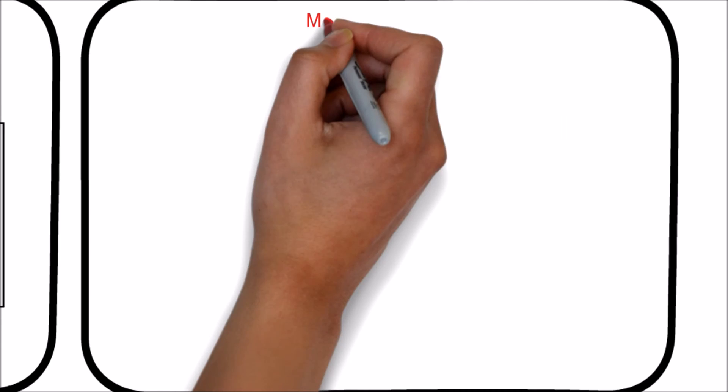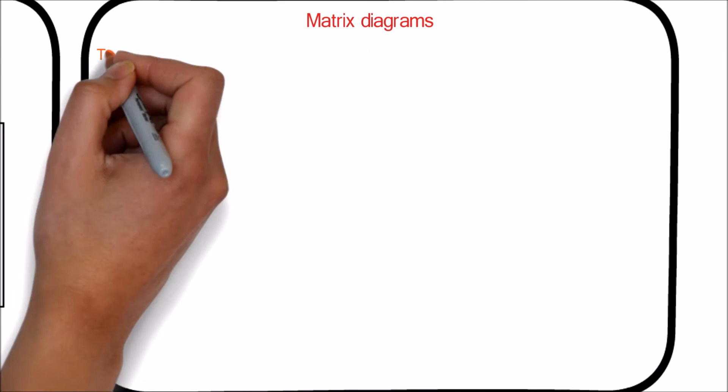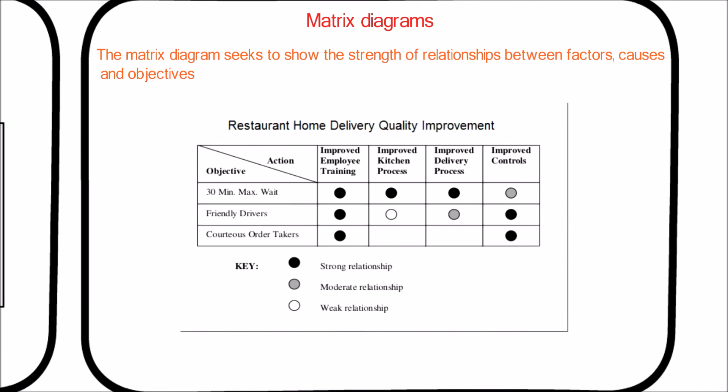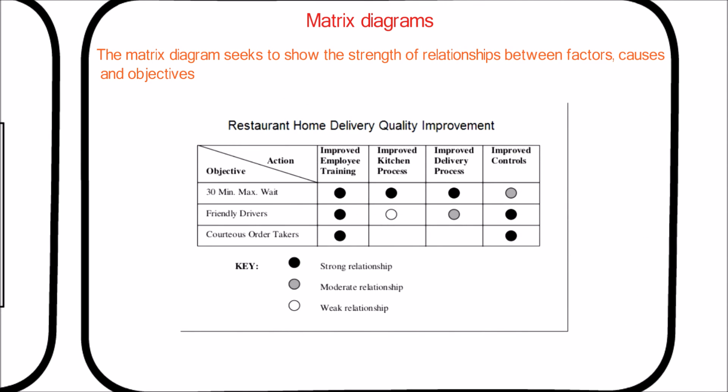Now let's see the Matrix Diagram. The Matrix Diagram seeks to show the strength of relationships between factors, causes, and objectives. Here is an example of a restaurant home delivery quality improvement study. You can see here how each objective is related to each of the factors along with the strength.